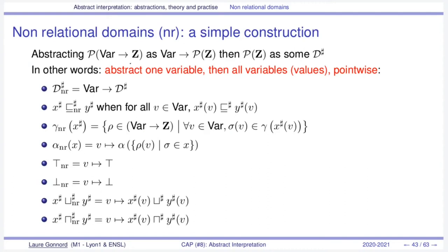We are abstracting a set of values as a map from each variable to a set of values, and then this set of values is abstracted to some shape in the abstract domain. What we will do is abstract the values of one variable, and then all variables will be defined pointwise. The domain over all variables is defined pointwise from the domain for a single variable, which makes it easy to define the order and the union of two abstract values as the union of individual abstract values.